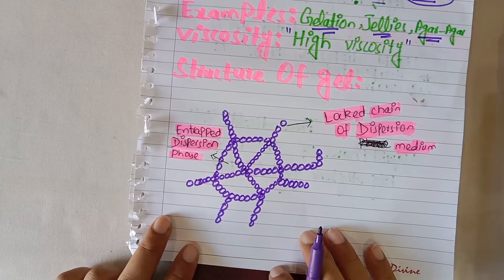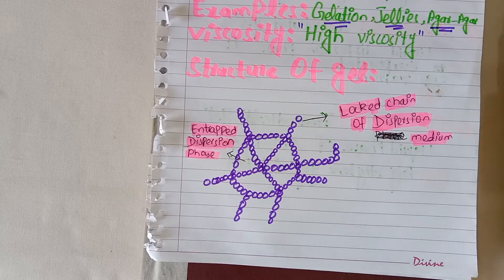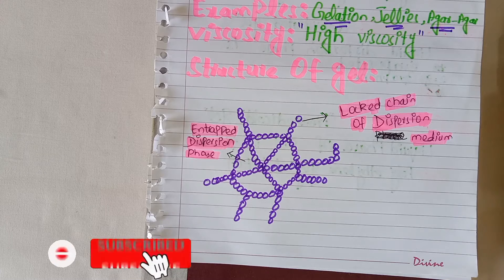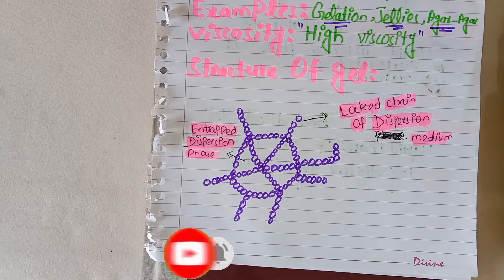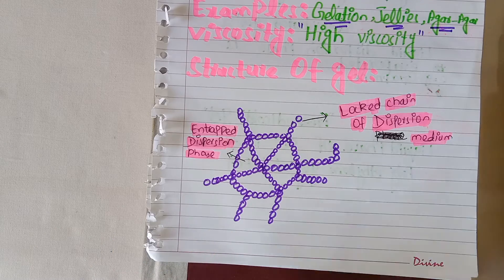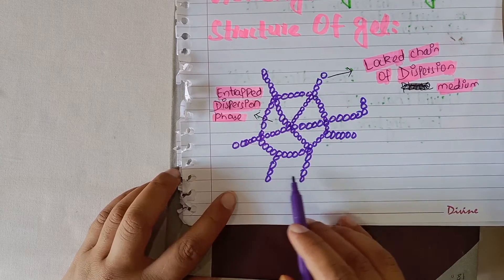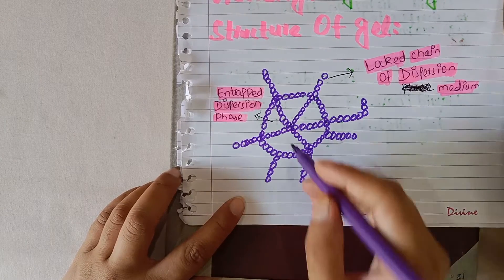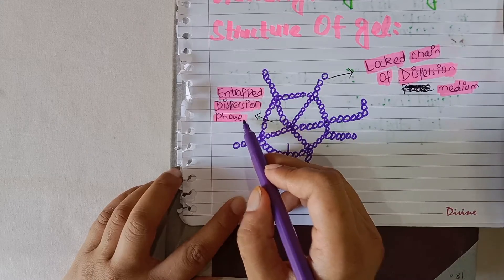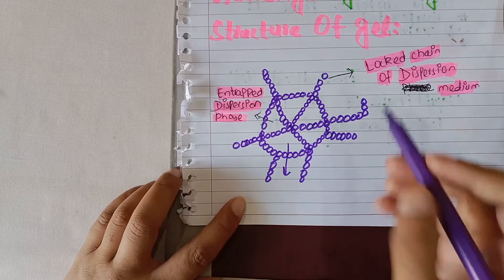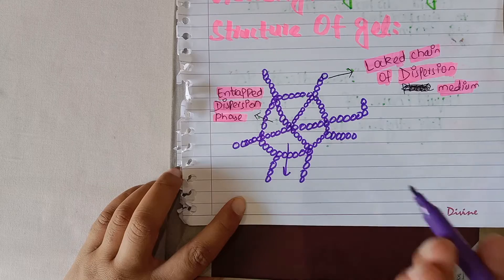Now let's understand the structure of gels. Gels are colloidal systems in which the dispersion phase is liquid while the dispersion medium is solid. They have a honeycomb-like structure in which the empty spaces represent the trapped dispersion phase — that is, the liquid phase — and the locked chains represent the dispersion medium, which is solid in nature.